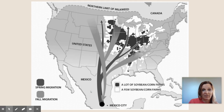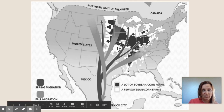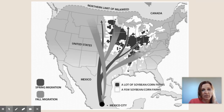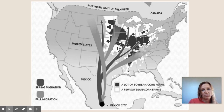That's just where they're overwintering because the cold is too much here in the United States and in Canada. If we look at the farms, we can see that there is a significant number of soybean and corn farms throughout the Midwest of the United States, and there are very few places along the monarchs' breeding and eating path where there are not many soybean and corn farms.